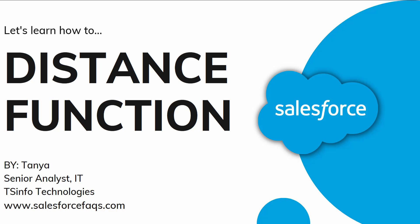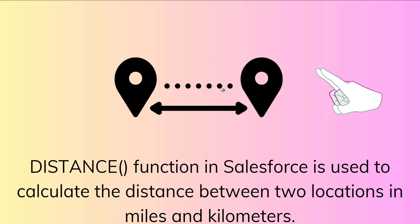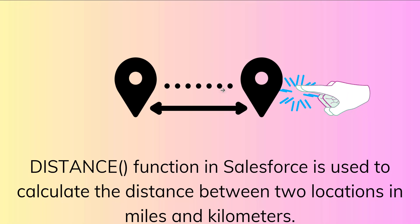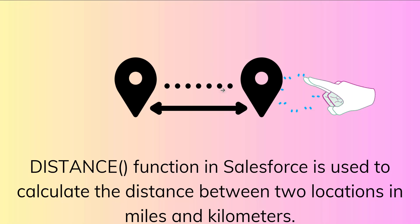Hello everyone, welcome to the channel. In today's video we are going to learn about the distance function, for both Salesforce Lightning as well as the Classic interface — how we can use this distance function to calculate the distance between two points in Salesforce. The distance function is one of the mathematical functions in Salesforce used to calculate the distance between two points. It accepts the data type as geolocation only, and gives the result in miles or kilometers.